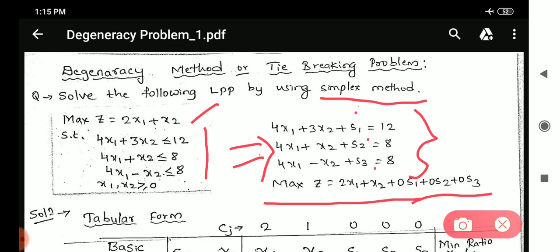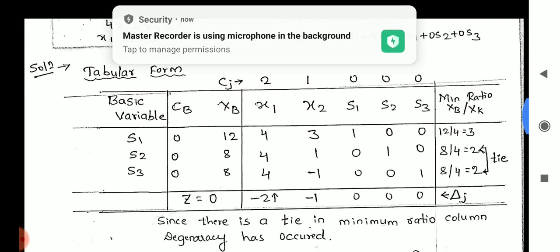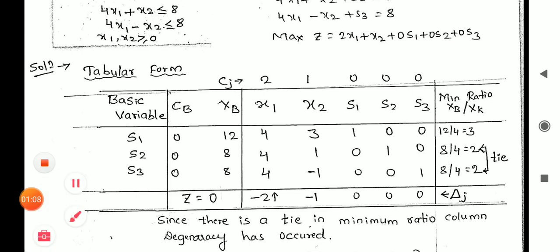Once we are done with those constraints, let us go to the tabular form. In the tabular form, the first field will be basic variable, then cb, xb, x1, x2, s1, s2, s3 and minimum ratio.